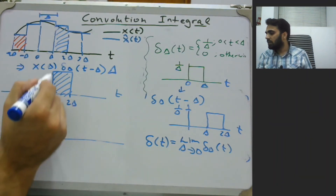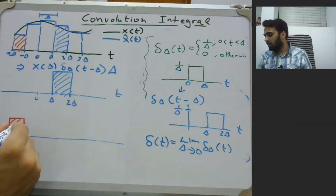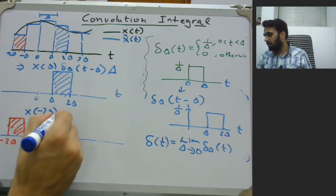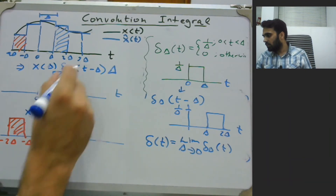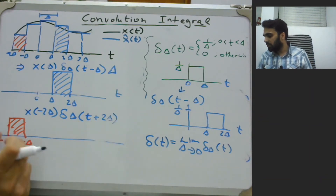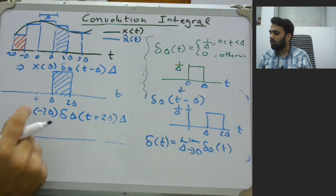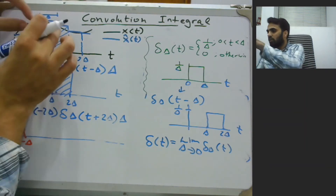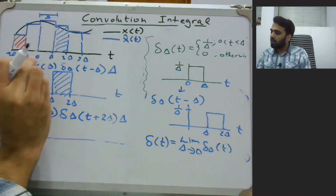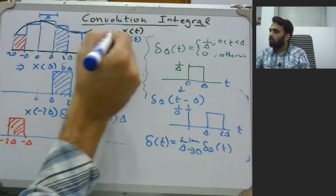By this expression we are defining this rectangular signal which is a part of a composite signal. Similarly, for the other block we can have simply X(minus 2 Delta) times Delta_Delta(t plus 2 Delta) times the width Delta — capturing the height, the instantaneous value at that particular time, and the width. We are going to break all of these blocks and write algebraic expressions for each of them, and if we sum all of them together we get X-hat(t).